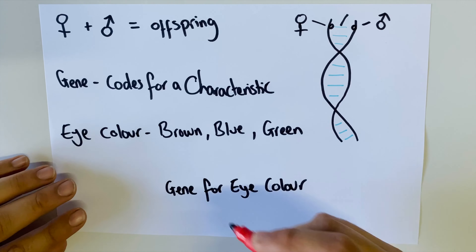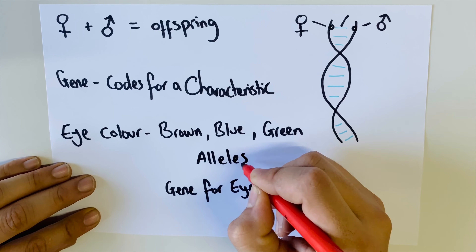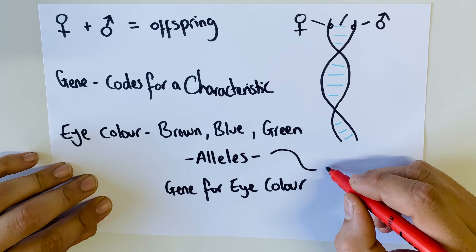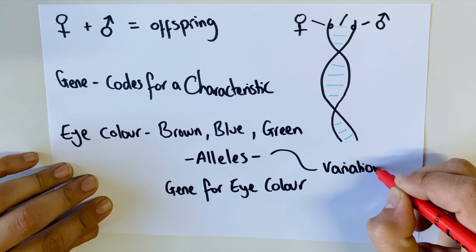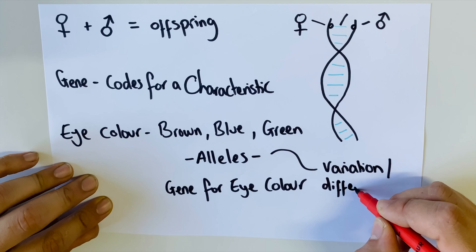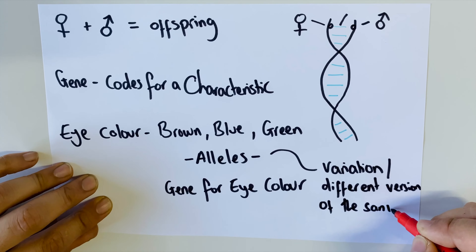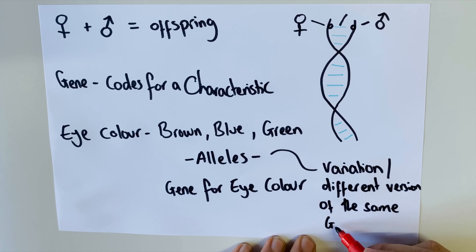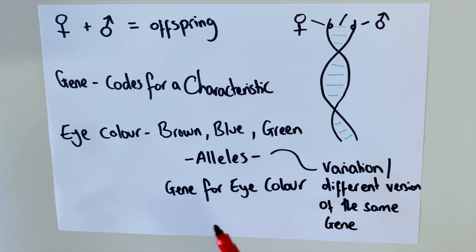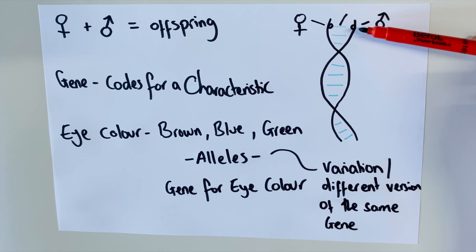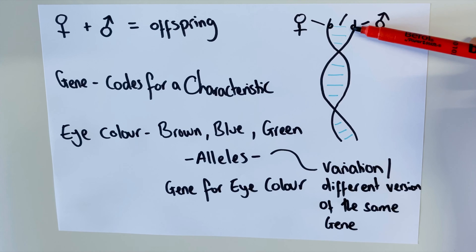Each of these bands on the DNA strand represents a gene, and there are so many genes in any organism it would be hard to even say the number. A gene codes for a characteristic. A characteristic depends very much on the type of gene — for example, a gene for eye color produces a characteristic you can see, whereas something like blood type is a characteristic we can't see with our naked eyes. So some characteristics are visual and some are not.